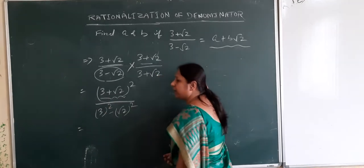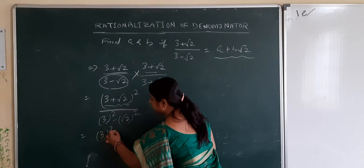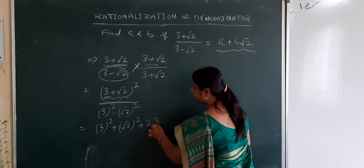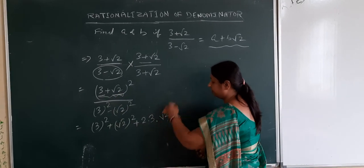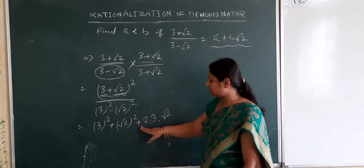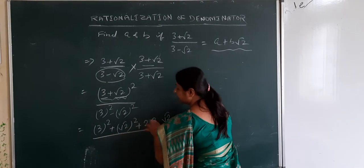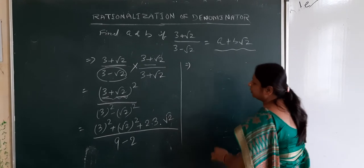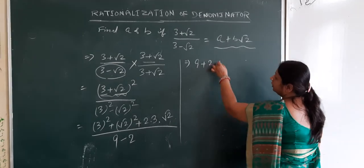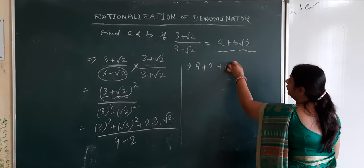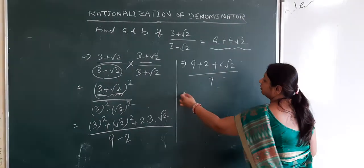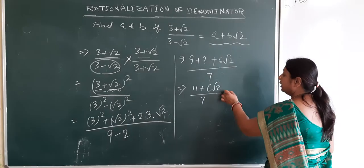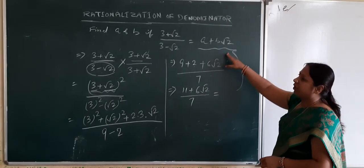For the numerator, using the identity (a plus b) squared = a squared plus b squared plus 2ab, we substitute a = 3 and b = root 2. This gives 9 plus 2 plus 2 times 3 times root 2, which is 11 plus 6 root 2. The denominator gives 9 minus 2 = 7. So the result is (11 plus 6 root 2) divided by 7.